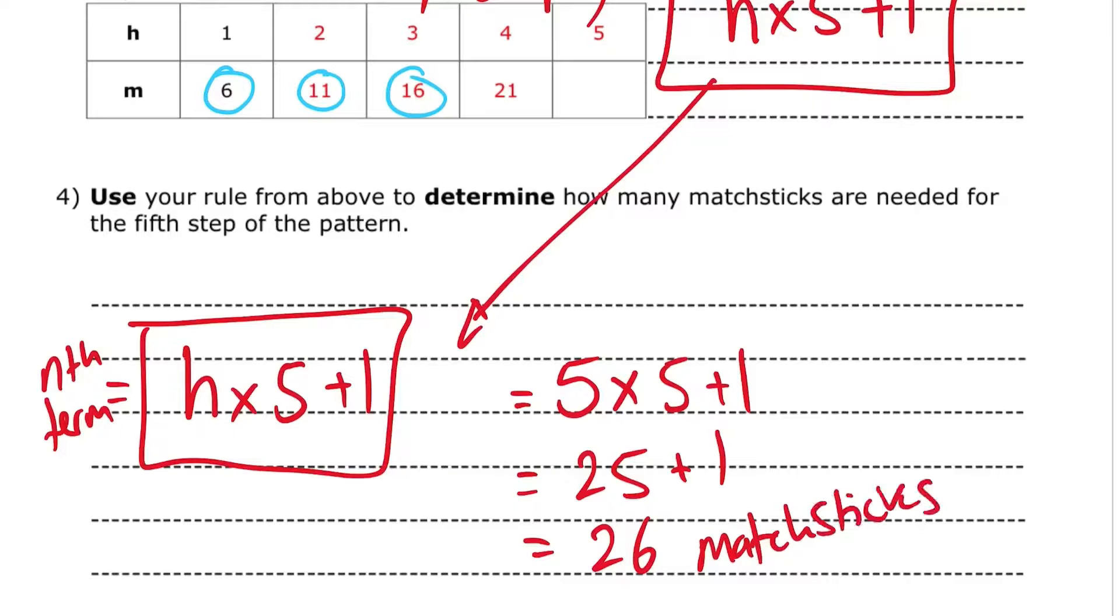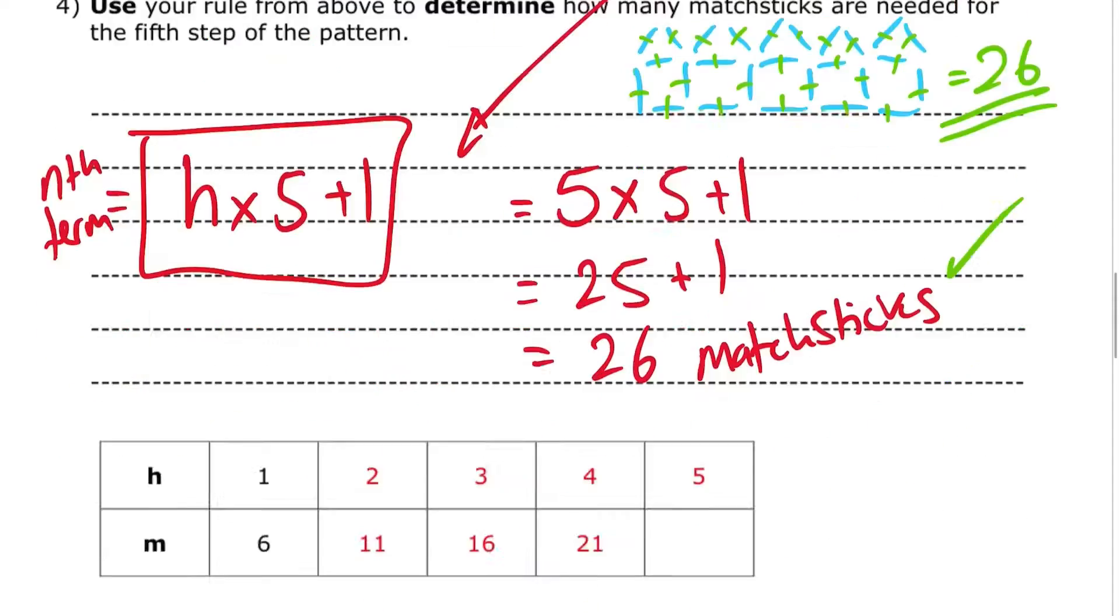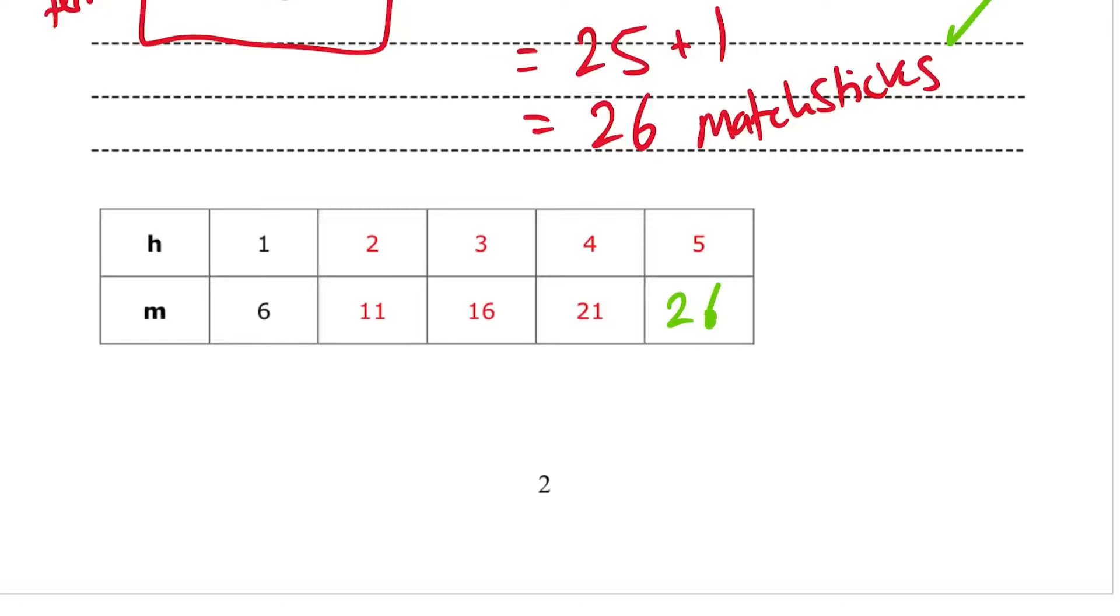So let's draw the fifth shape. I'm just going to count how many matchsticks I have. 26 matchsticks. So that works. 26 matchsticks. So let's move on.